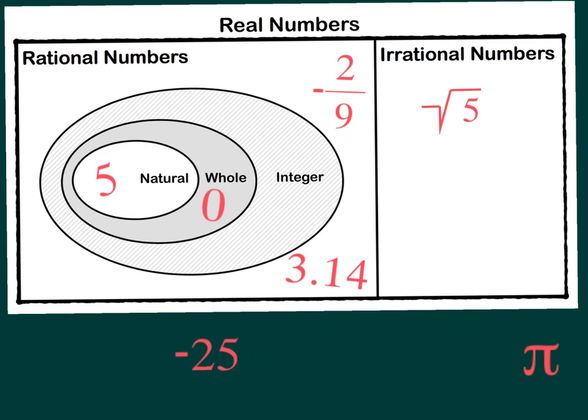Negative 25. That is not a natural number or whole. That would fit under the category of integer. Again we're writing it just one time, and placing negative 25 over here means it's an integer and it's rational and it's real.